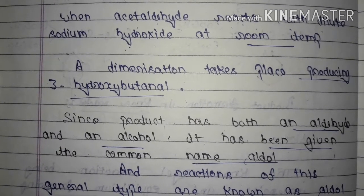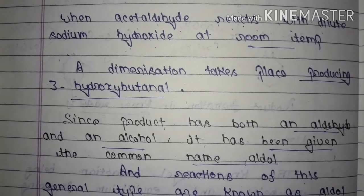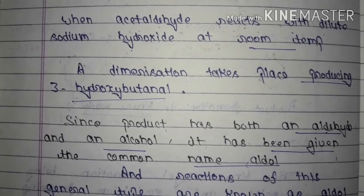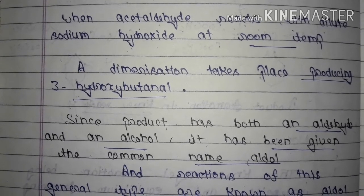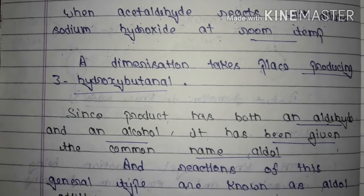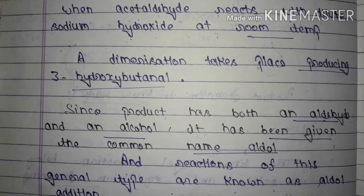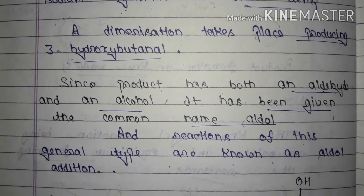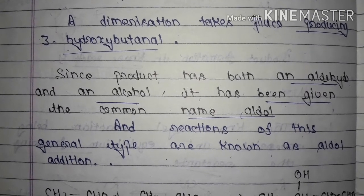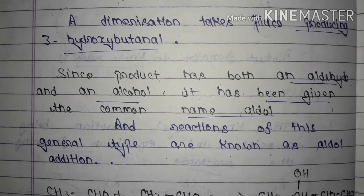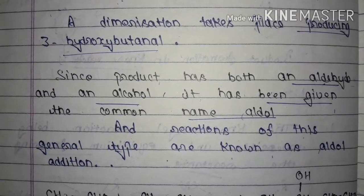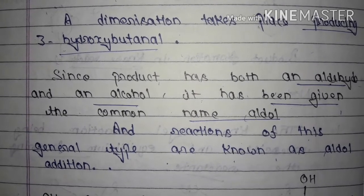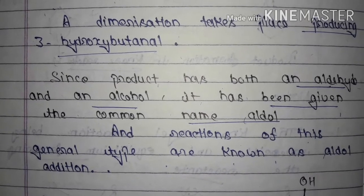When acetaldehyde reacts with dilute sodium hydroxide at room temperature, a dimerization takes place producing 3-hydroxybutanal. That is, when acetaldehyde reacts with dilute NaOH at room temperature, the product you get through dimerization is 3-hydroxybutanal. Since the product has both an aldehyde and an alcohol, it has been given the common name 'aldol'.